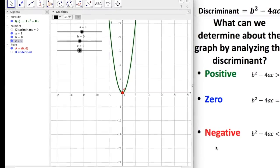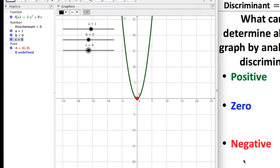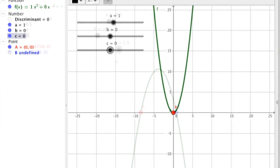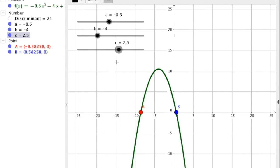All right, welcome back. What did you discover? Well, first let's talk about positive. Let me share with you three of the ones that I found. I got a discriminant of positive 21 when a was negative 5, b was negative 4, c was 2.5, and I had two roots, one at negative 8.58, and one at positive 0.58.